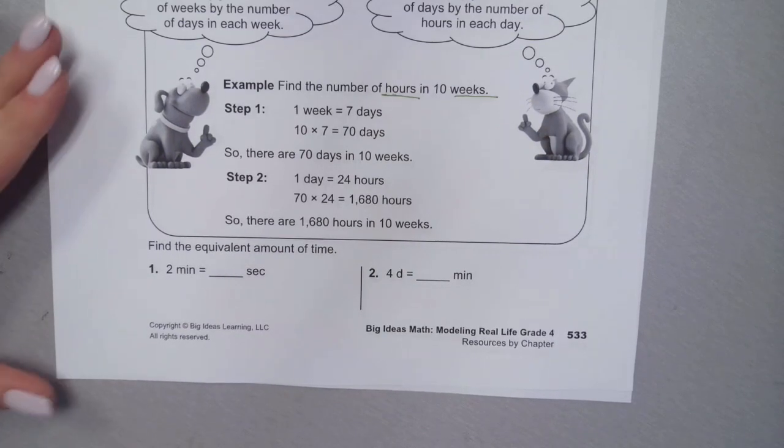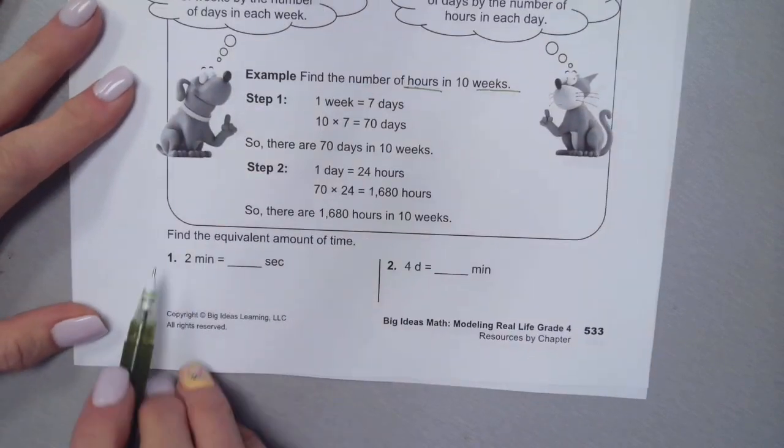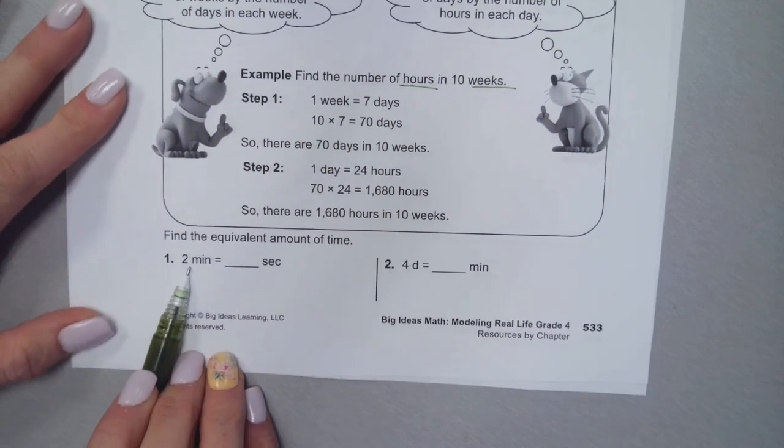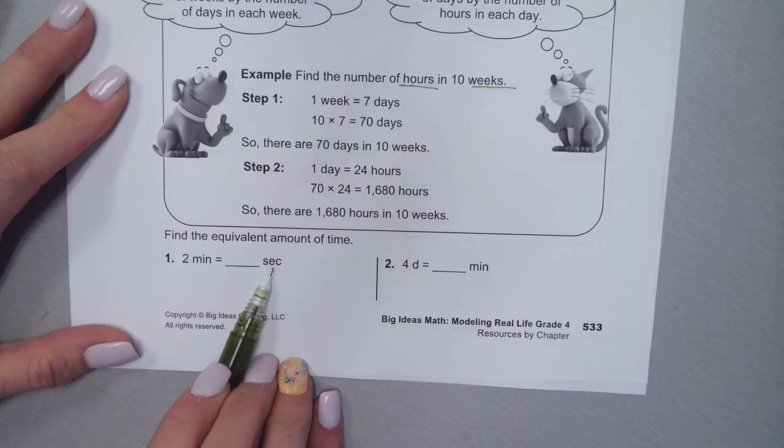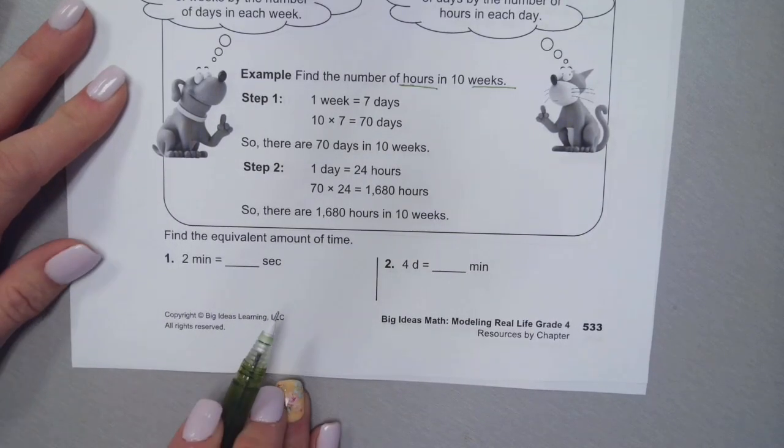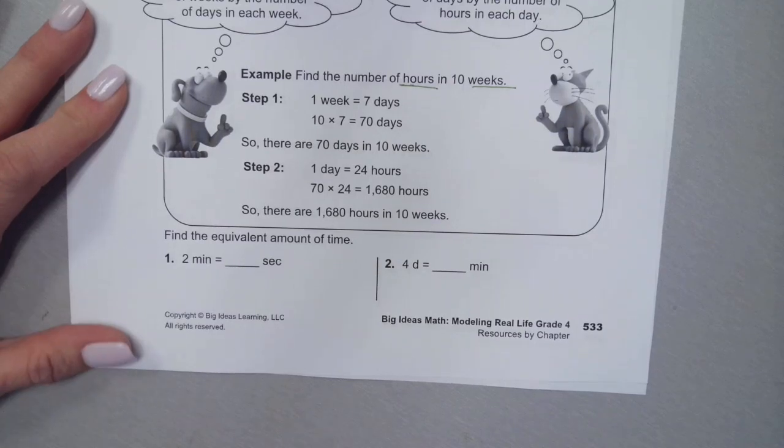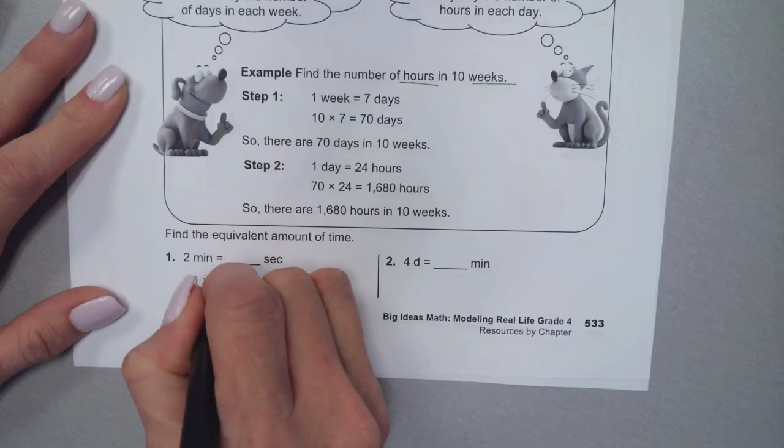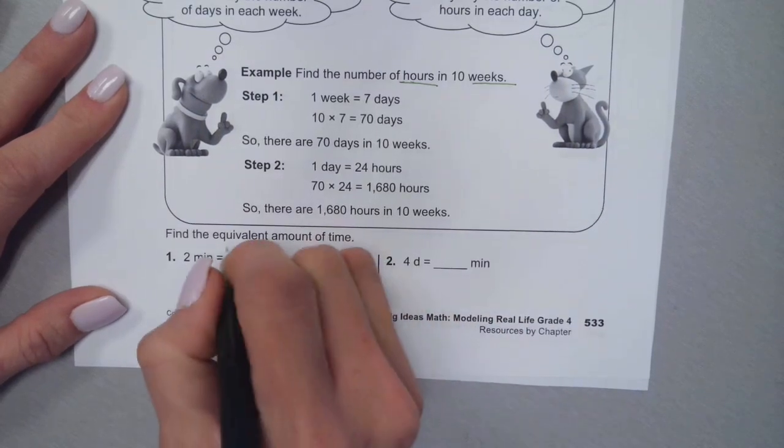Find the equivalent amount of time. I'm trying to go from two minutes to seconds. How many seconds are there in one minute? In one minute, 60. So I would need to multiply two times 60.